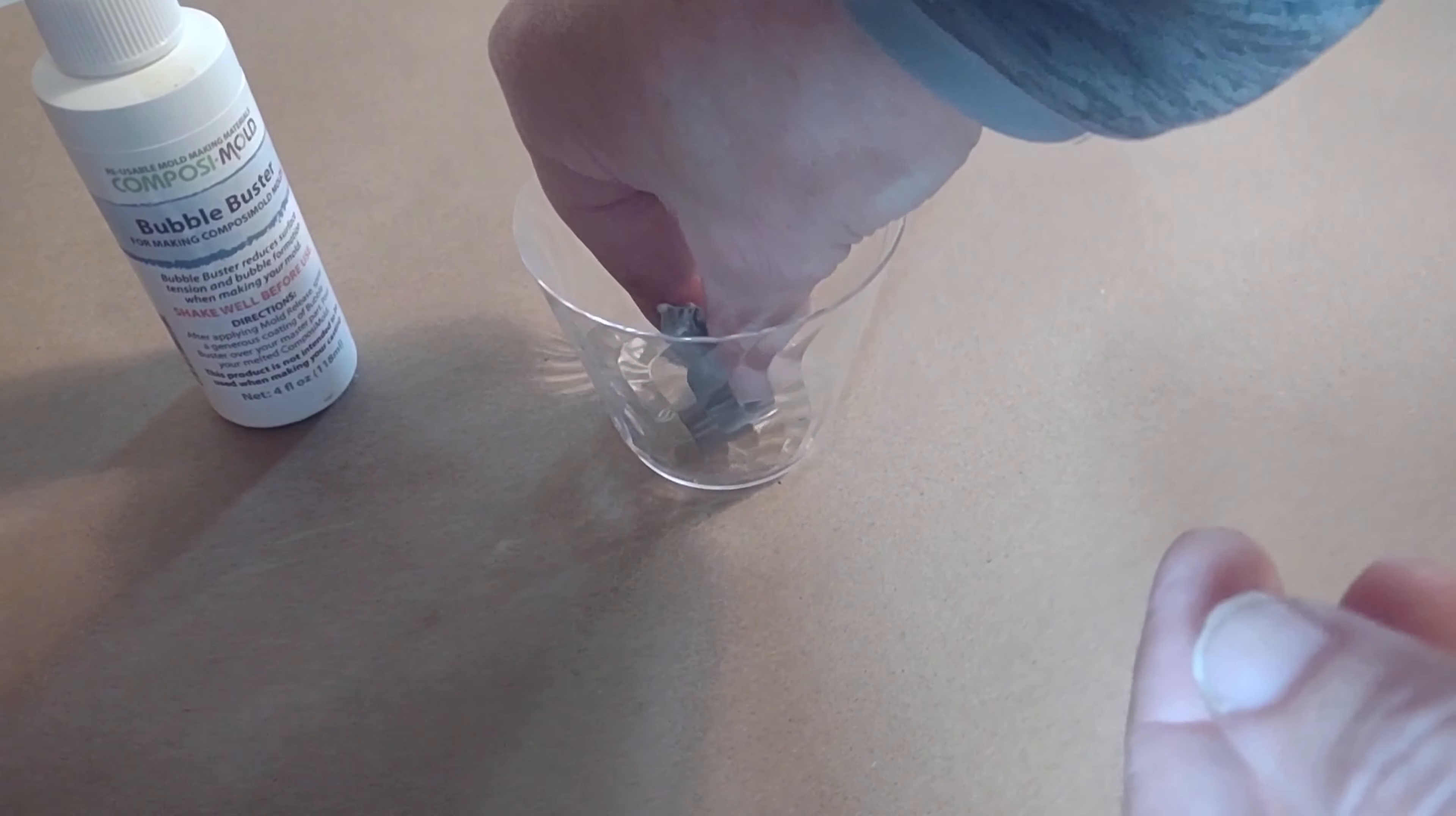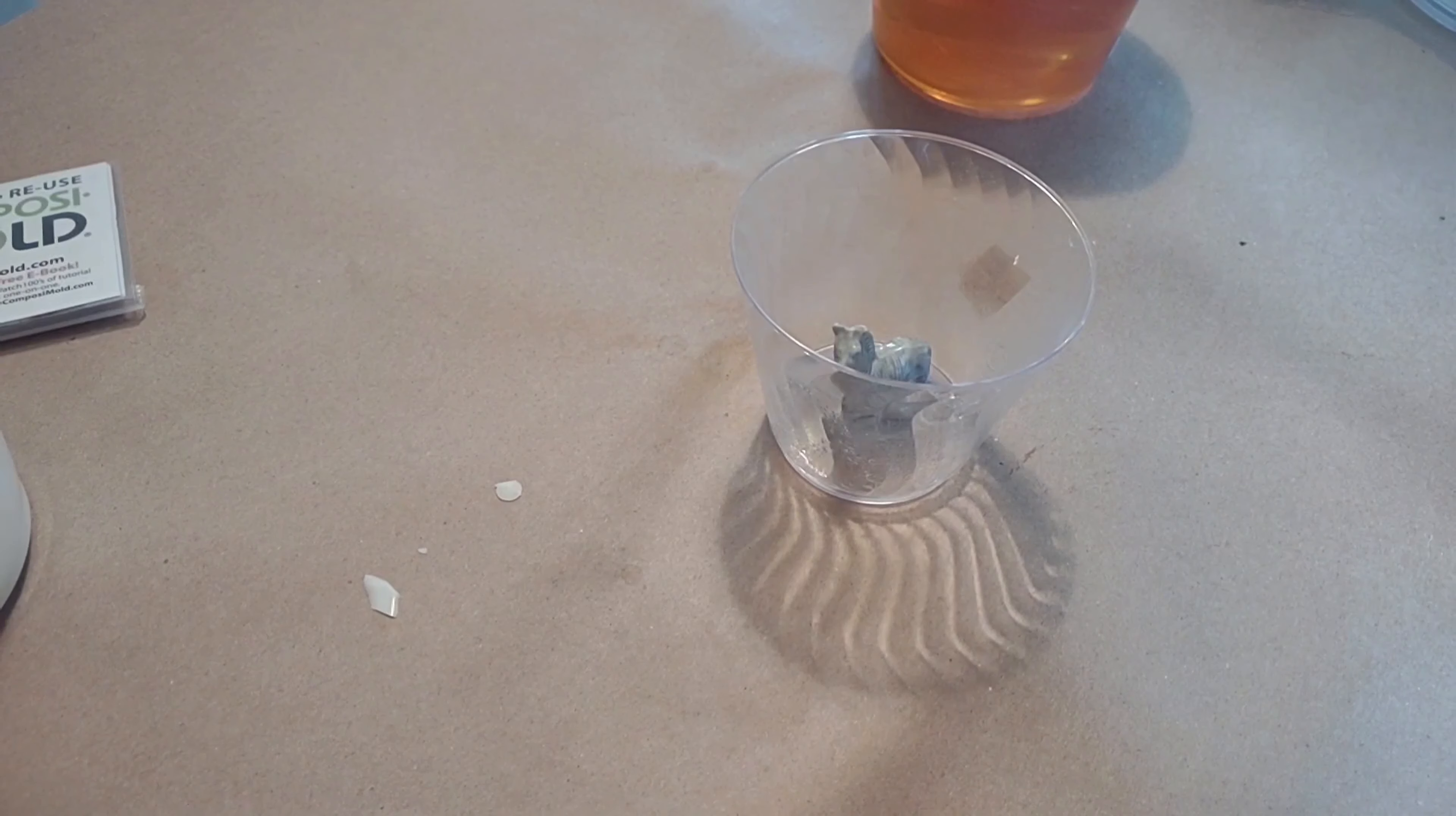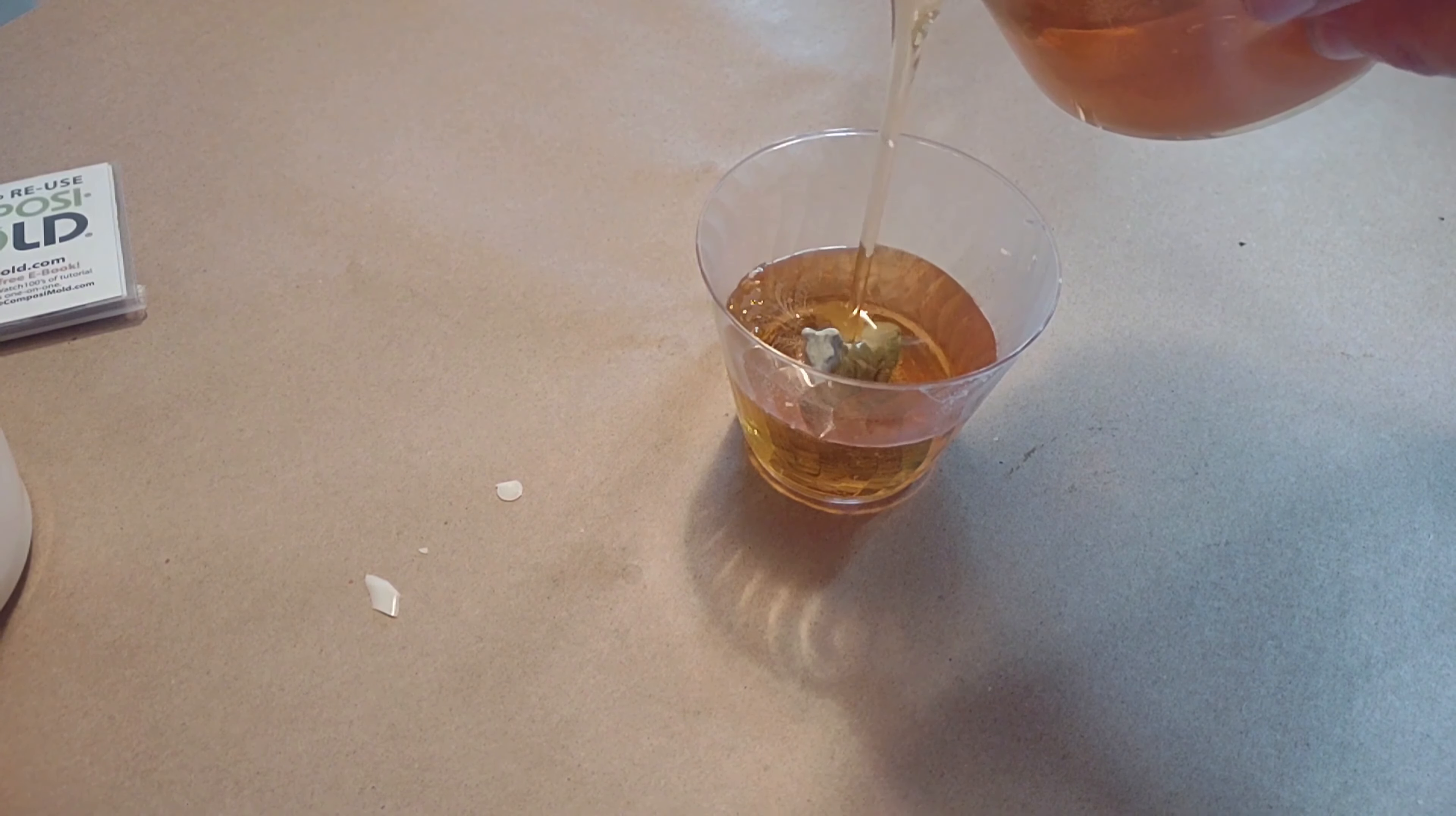We're going to start by making a mold of the original object using ComposiMold and bubble buster. Spray a little bit of bubble buster onto the surface of the part just to reduce surface tension. If necessary you can also put a little bit of vegetable oil as the mold release. Then you want to melt the ComposiMold in the microwave. Don't overheat it and then let it cool a little bit before you pour it over your object.